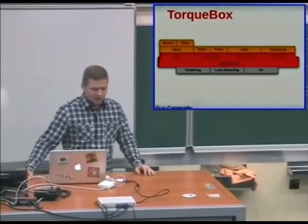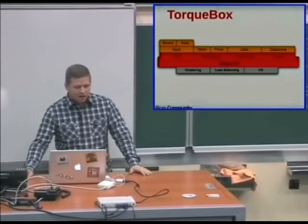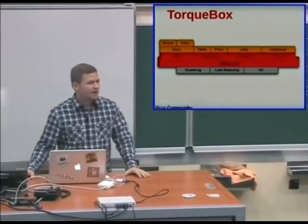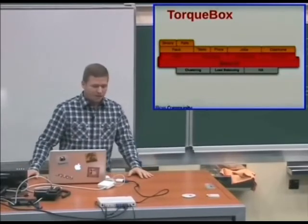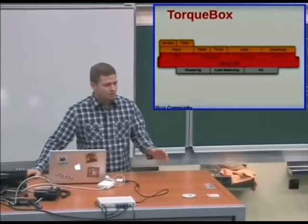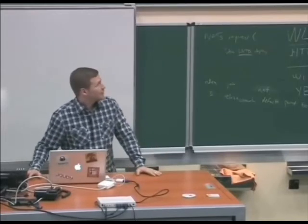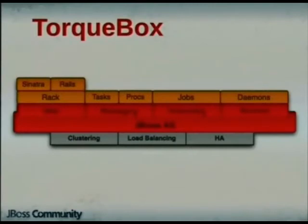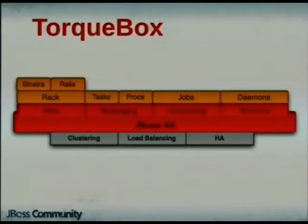TorqueBox tries to reduce that complexity. Everything in red in the diagram are things provided by the underlying JBoss application server. Everything in orange are our Ruby APIs. We provide Ruby APIs to things provided by the underlying application server — asynchronous tasks, messaging, scheduled jobs like Cron, long-running daemons, and more — without any extra setup or monitoring required.